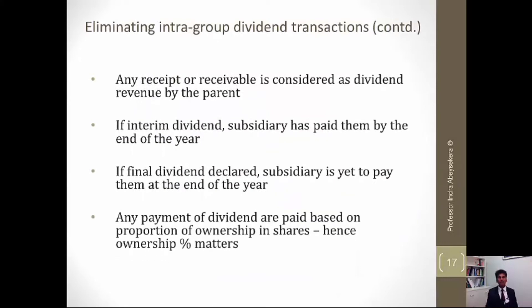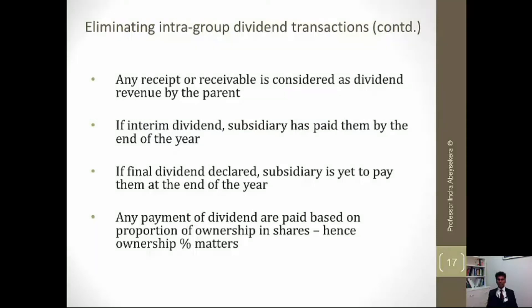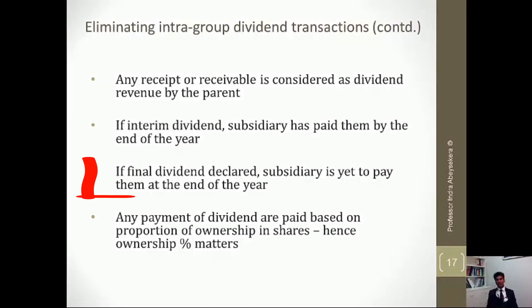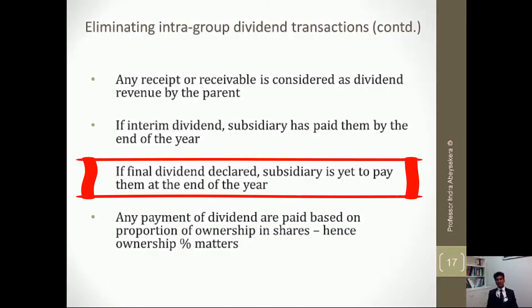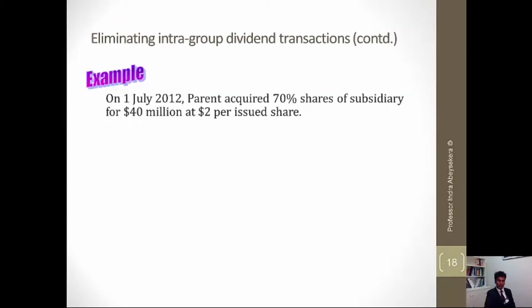There are two types of dividends. One is called the interim dividend, which is declared and paid during the year — in the same year it is declared and paid. And the final dividend is the dividend that is declared at the end of the year and generally has been paid in the following year. So there are two types of dividends.